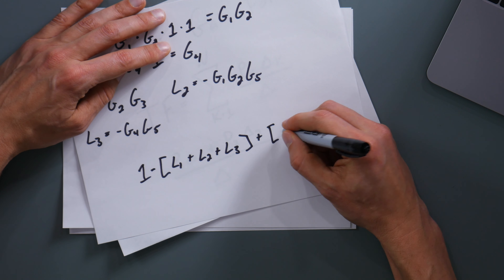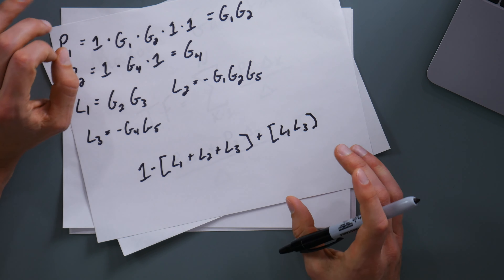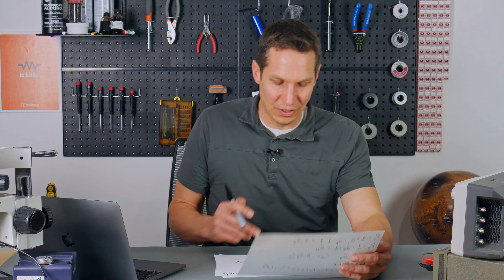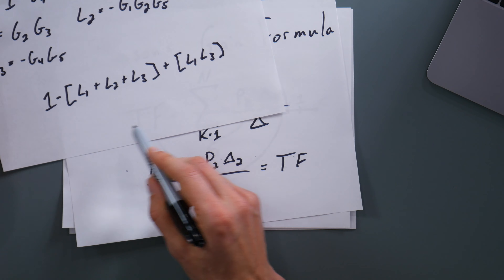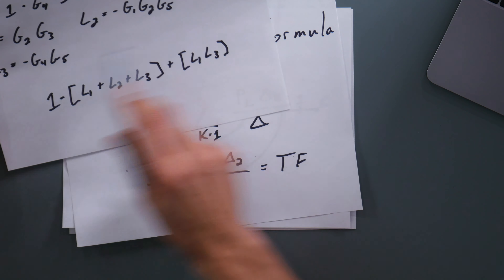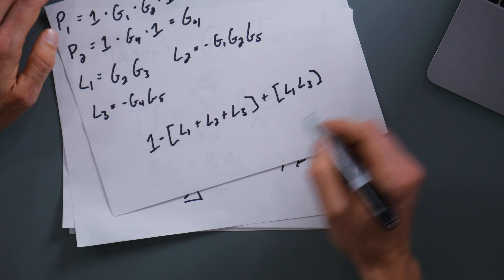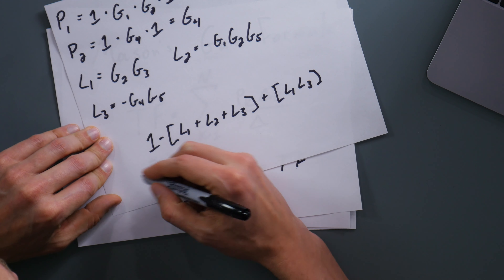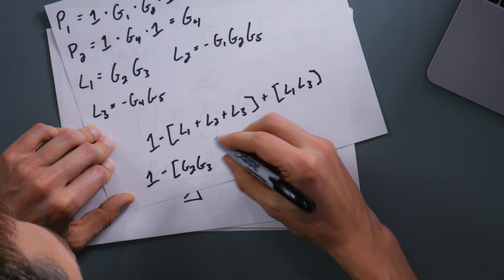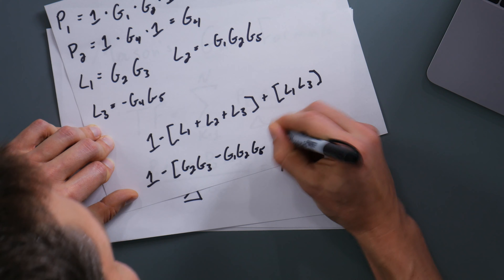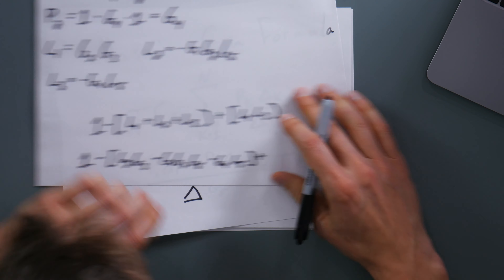The next step is to figure out which loops are non-touching — that is, making sure they don't share any nodes. Loop one uses nodes two and three. Loop two goes all the way through and overlaps with loop one. Loop three uses nodes one and four. Loop one does not touch loop three, since they share no nodes. So the only two non-touching loops are L1 and L3.